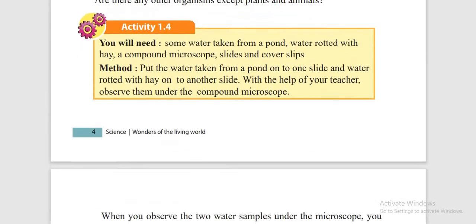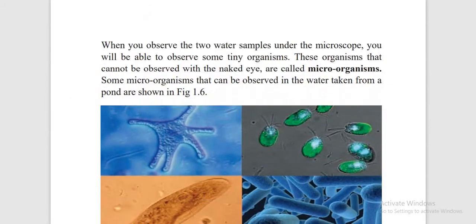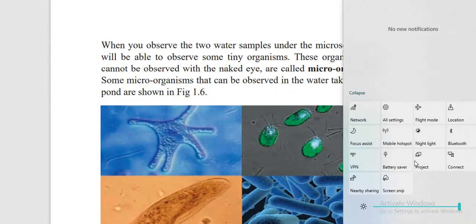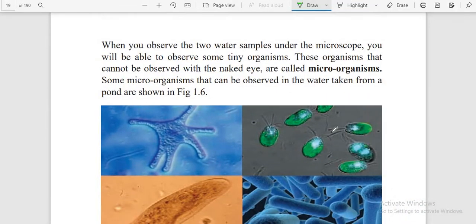The third type is the special organism called microorganisms. Why are they called micro? Micro means small or tiny, so microorganisms means tiny organisms.